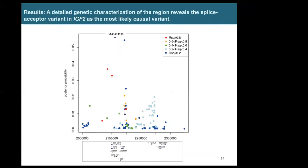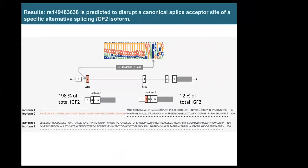We integrated all available data — exome sequencing, imputation, GWAS data, and exome chip — and conducted fine mapping to identify the most likely causal variant at this locus. The top variant was the one identified from the exome chip. It turns out this variant is located in a canonical splice acceptor site — the two nucleotide positions upstream of the exon. If this nucleotide is changed, the adjacent exon will not be spliced in and the corresponding isoform will not be formed.